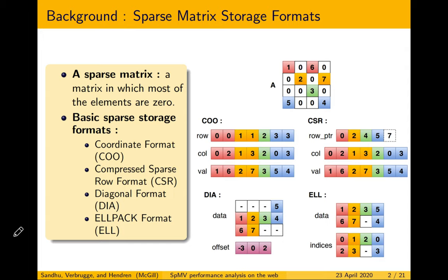Let's first introduce what a sparse matrix is. A sparse matrix is a matrix in which most of the elements are zero. For example, in matrix A, the colored tiles are the non-zeros and the white tiles are the zero values. There are four basic sparse storage formats: COO, CSR, DIA, and ELL.